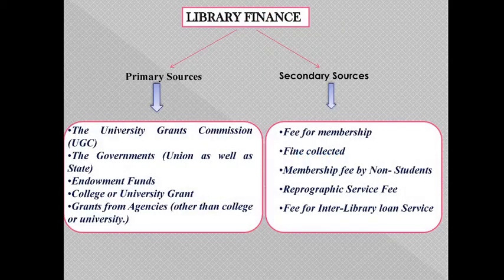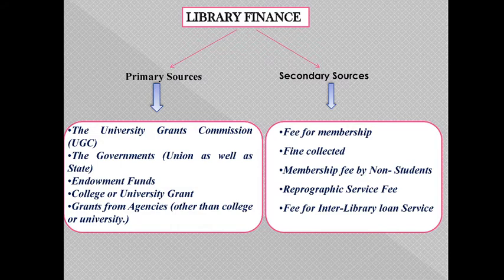Library finance is mainly divided into primary sources and secondary sources. Under primary sources: UGC, the governments, the endowment funds, college or university grants, and grants from agencies other than college and university.